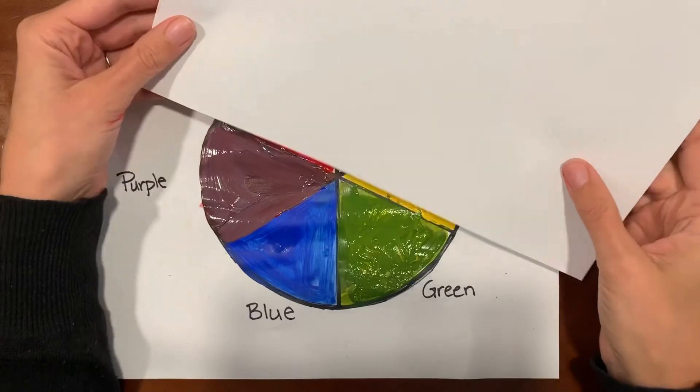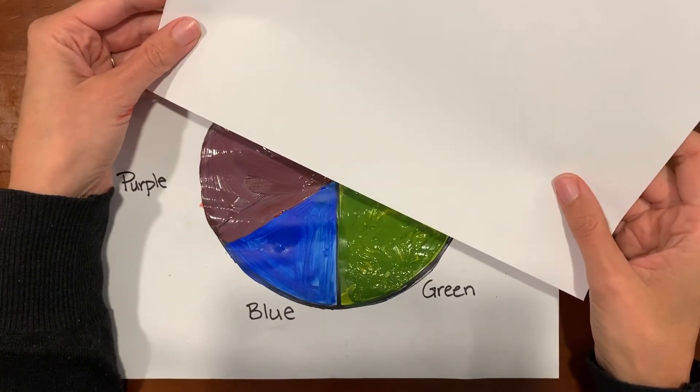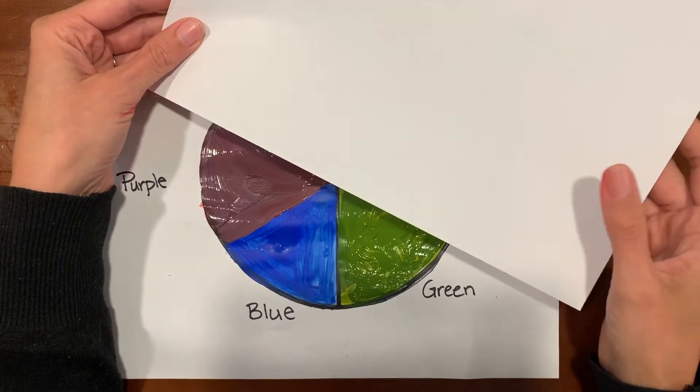Our cool colors are made up of purple, blue, and green, and they remind us of things that are colder like the water in the ocean.